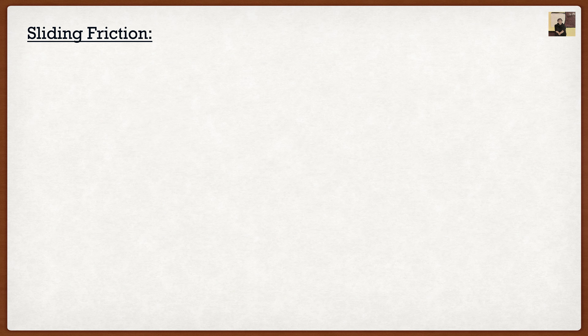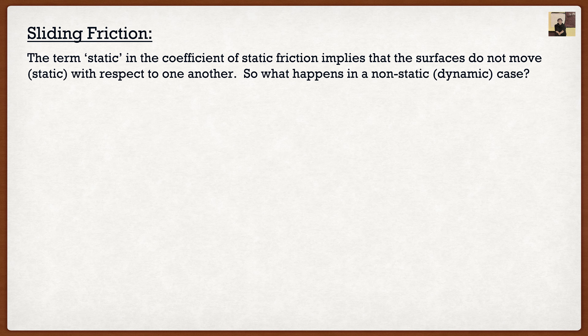So, sliding friction — the term static is something we need to discuss. In our formula we used μs, the coefficient of static friction. Whenever you hear static, things aren't moving. But why do we specify static? Because there becomes a point where, if you compress two surfaces and try to slide, slip occurs and motion begins. When motion starts to occur, the coefficient of friction changes. So we have to analyze a dynamic or kinetic case. The sum of forces in a static case equals zero, but in a non-static case, the summation of forces equals mass times acceleration.